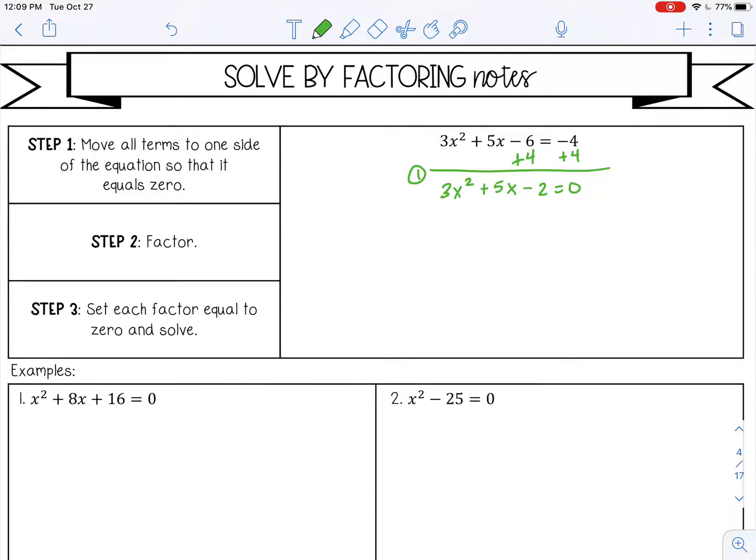Step two is we're going to factor. This is a trinomial where a is greater than one. A is three, so I'm going to multiply a times c and put that number at the end. Three times negative two is negative six.